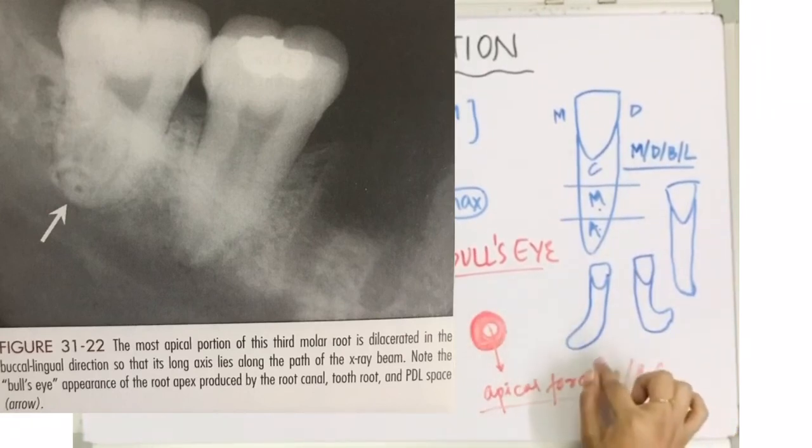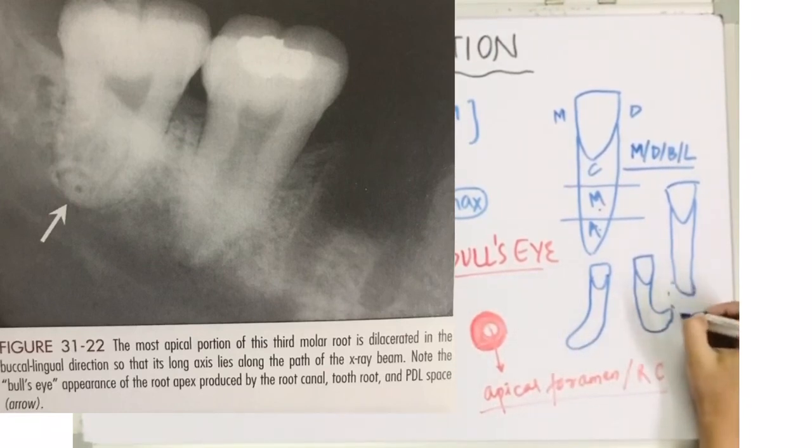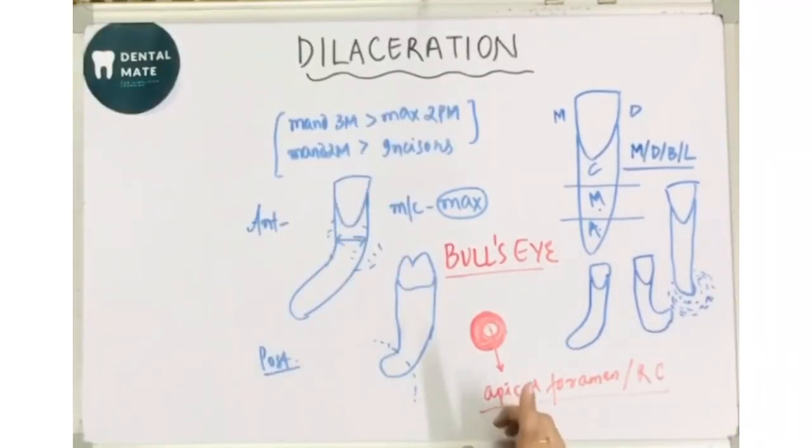Mostly, these teeth are non-vital teeth and these are mostly associated with periapical lesions. Also, if the tooth has a large curvature, large angulation, large bend, then there should be amputation of the root apex and root canal therapy should be done for the tooth, and then treat it like that way.